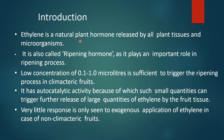Ethylene is a natural plant hormone released by all plant tissue and microorganisms. It is also called the ripening hormone as it plays an important role in the ripening process. A low concentration of 0.1 to 1 microliter is sufficient to trigger the ripening process of climacteric fruits. It has autocatalytic activity, because of which such a small quantity can trigger further release of large quantities of ethylene by fruit tissue. A very little response is only seen to exogenous application of ethylene in the case of non-climacteric fruits.